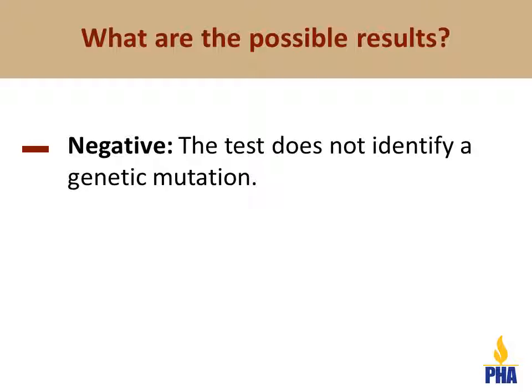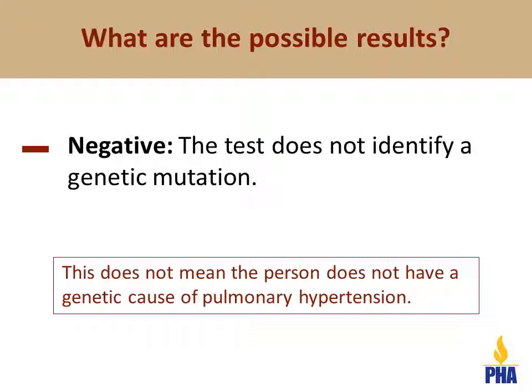A negative test result means that we did not find a genetic mutation that is the cause of the pulmonary hypertension. Genetic testing may be negative because the individual does not have a genetic form and their pulmonary hypertension is caused by something besides genes. It may also be negative because the person has a genetic mutation that was not detected by the test, or because the individual has a mutation in a gene that has not yet been found to cause pulmonary hypertension.